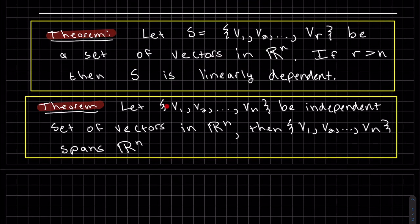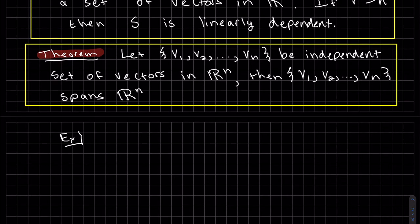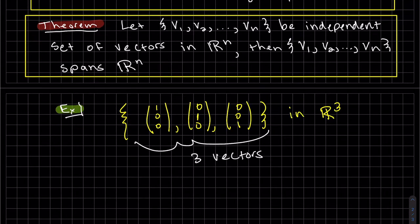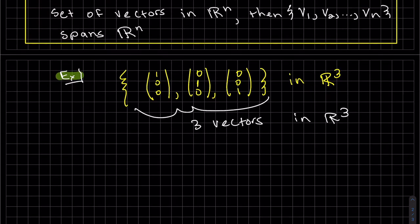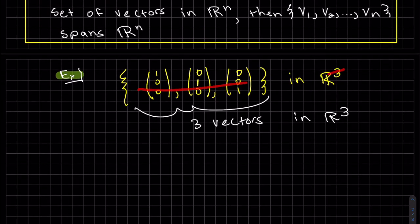So this next theorem says, if we have N vectors that are independent in Rn, so if all the vectors are independent and there's N of them in Rn, then this set also spans Rn. So that's going to become an important theorem to help us show spanning. So an example of this, here we have three vectors in R3. Since they're the same number of vectors in R3 from the theorem, these three vectors span R3.